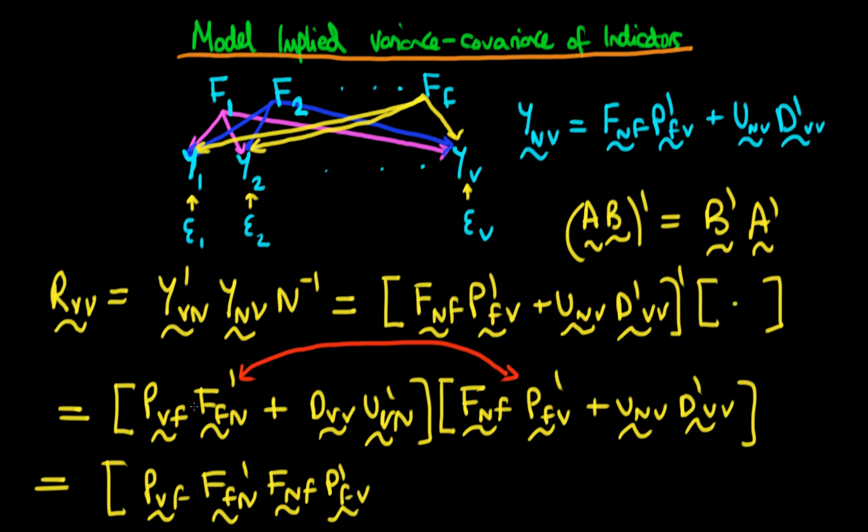The second expression is found by taking the first component of the parenthesis and multiplying it by the last of the second. So that's just going to be p_vf times f primed fn times u_nv times d primed vv. So that's the second component.